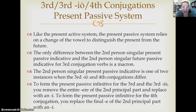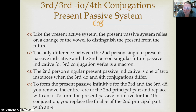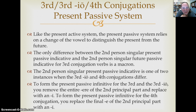In the future active indicative you have Am, Ace, Et, Amos, Atis, Ent telling you that you're in the future. Again, you're going to have that A and E telling you that you're in the future passive indicative as well. There are a couple of things about the third, third IO, and fourth conjugations that are a little complicated — there are a couple of hiccups involved.